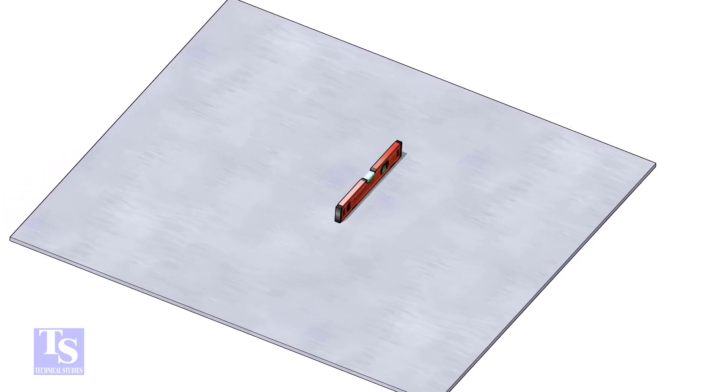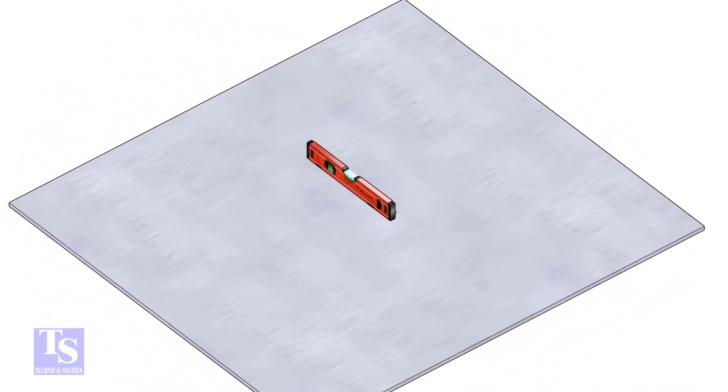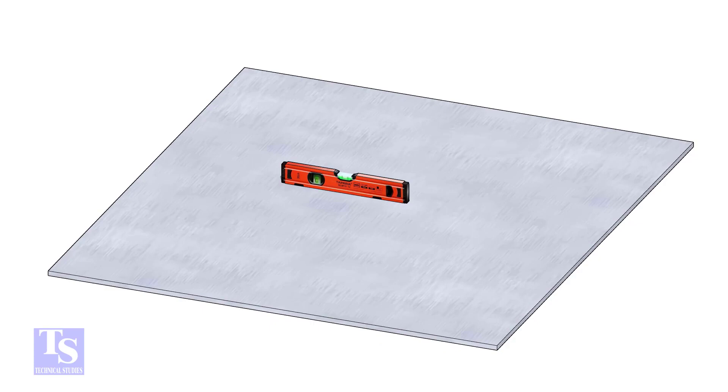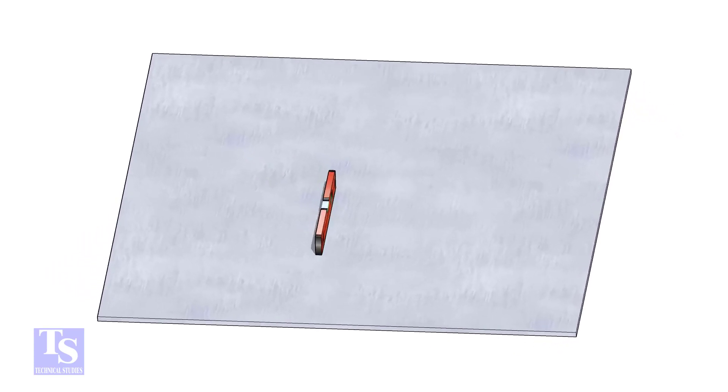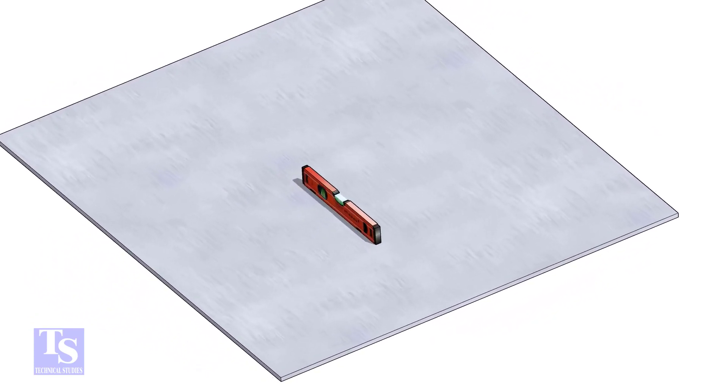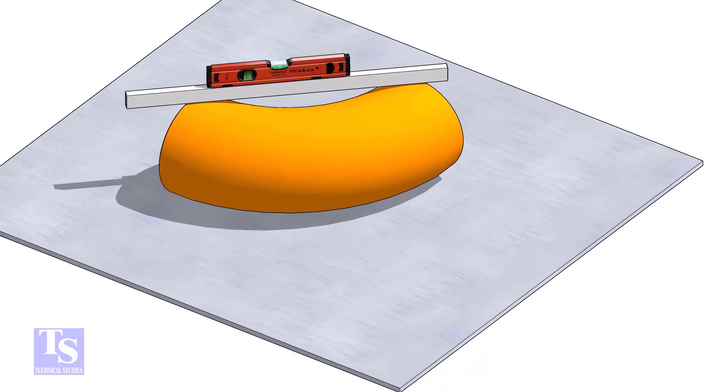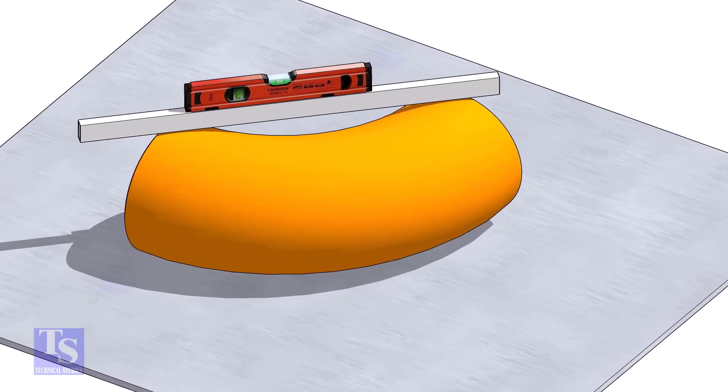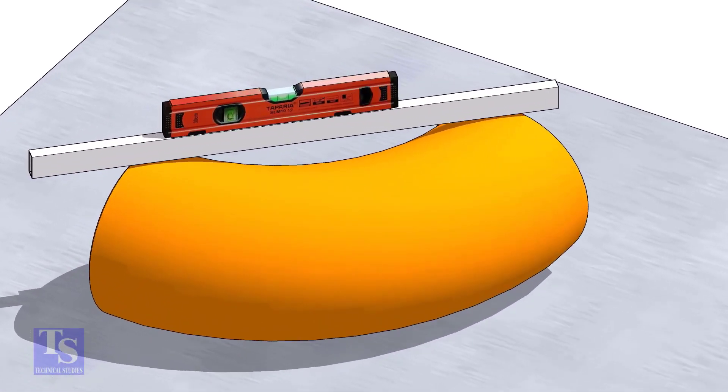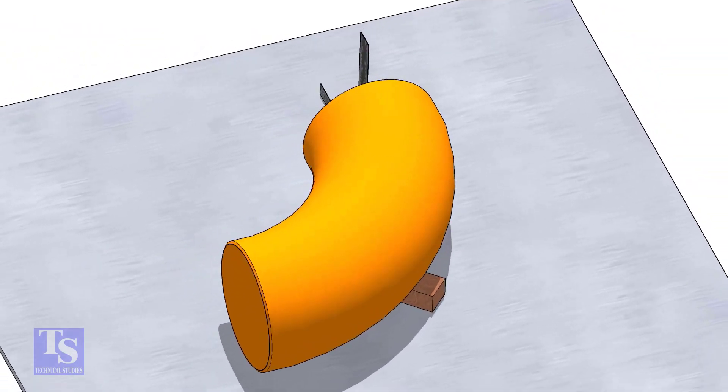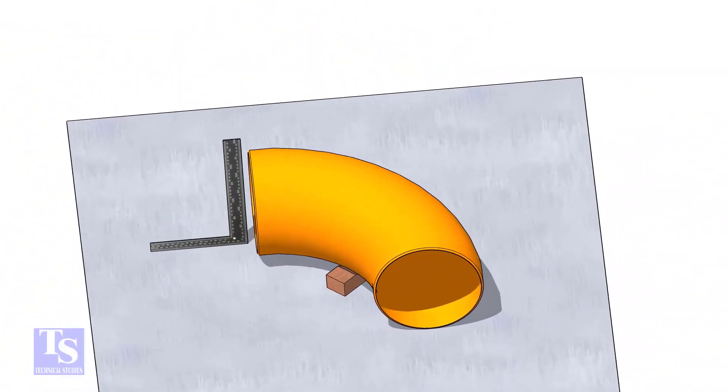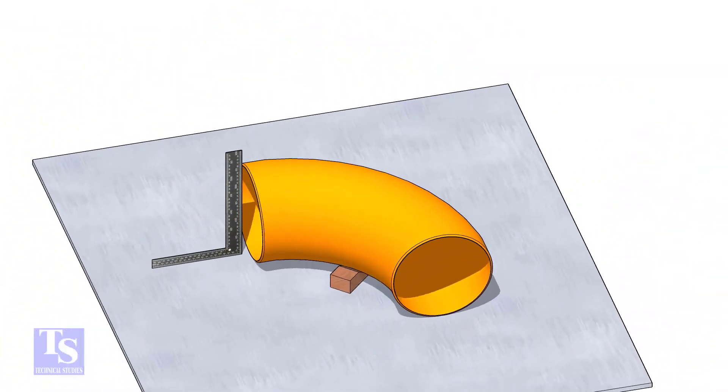Let us mark the center of the elbow. Choose a leveled plate and put the elbow on it. Check the level of the elbow. Check the squareness of the face of the elbow with the plate. If necessary, put some packing below as shown.